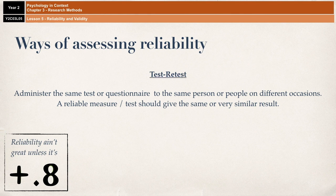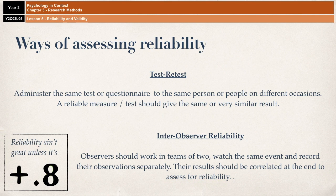The other way of assessing reliability is known as inter-observer reliability. Inter-observer reliability essentially means that when you're conducting an observation, observers should work in teams of two. They should watch the same event and record their observations separately, and then when they're done they should compare and correlate their results to find out whether there is a positive correlation — and if there is and that correlation is significant, then they can argue that it is reliable. This comes down to the issue that everybody has their own view of the world, which is a massive problem for observational research, because one researcher may interpret events differently to another because of subjectivity bias.